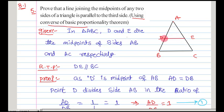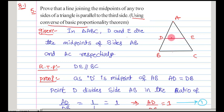That means I am taking point D as midpoint of AB and point E as midpoint of AC, and I am joining these two midpoints to get line segment DE. They are asking that if a line segment joining the two midpoints of two sides of a triangle, this line segment is parallel to the third side — that means they are asking us to prove DE is parallel to BC.